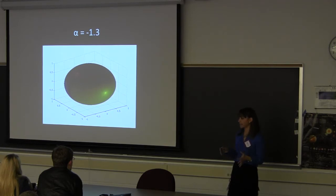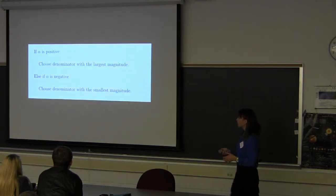So, for the opposite case, for negative alpha, why not choose the opposite choice or the sign that minimizes the magnitude of the denominator? So, this is exactly what I just said. If alpha is positive, choose the denominator with the largest magnitude. Else, if it's negative, choose the denominator with the smallest magnitude.